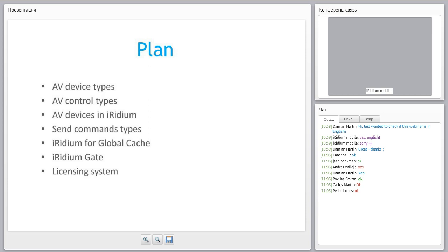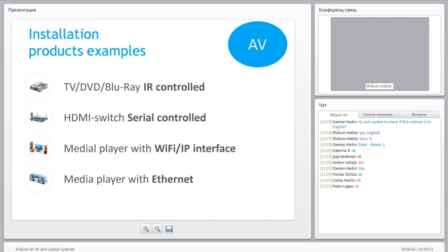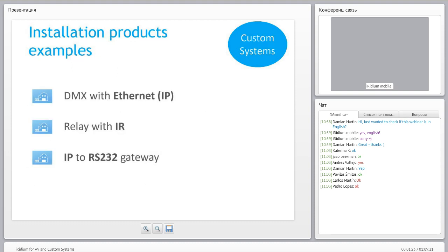Here are some examples of room control devices: TVs, DVDs, Blu-rays. Sometimes they use IR controls, sometimes serial controls, sometimes IP controls and Ethernet controls. More and more we see IP control devices, and after a year or so we will likely have everything on Wi-Fi, IP, or Ethernet controls.